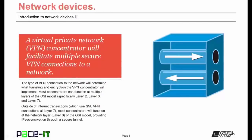We're going to begin by talking about the VPN concentrator. A virtual private network concentrator, or VPN concentrator, will facilitate multiple secure VPN connections to a network. The type of incoming VPN connection will determine what tunneling and encryption the VPN concentrator implements. Most concentrators can function at multiple layers of the OSI model, specifically at layers 2, 3, and 7. Outside of an internet transaction, most concentrators will function at layer 3, providing IPsec encryption through a secure tunnel.